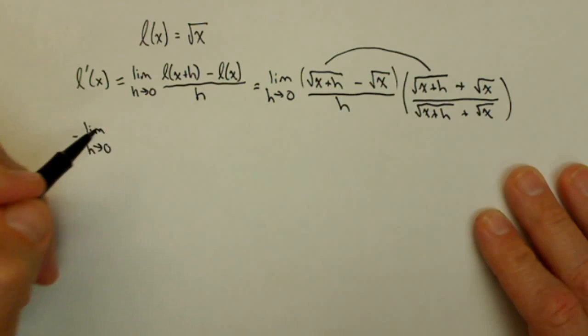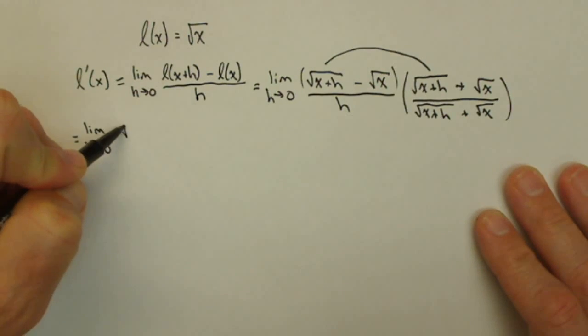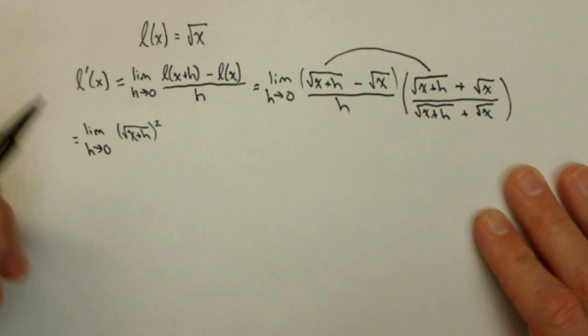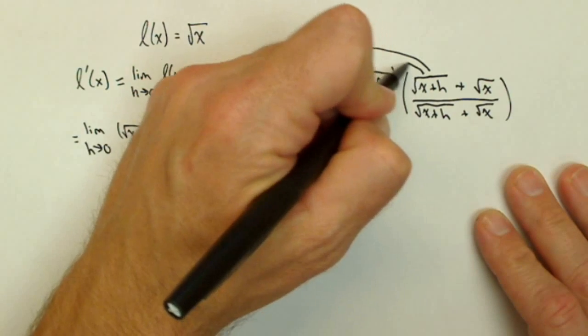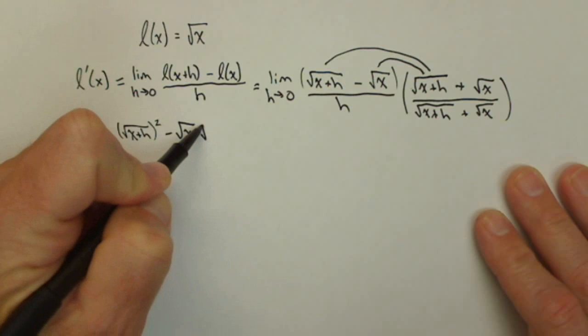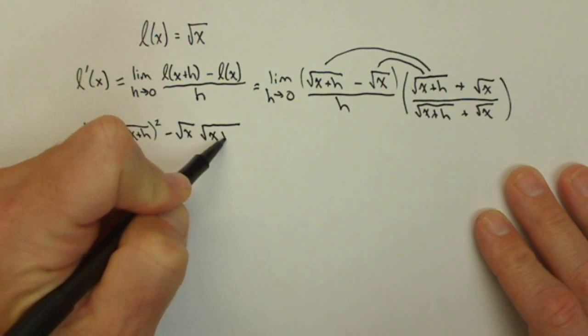Now when I multiply these two terms I'm going to get square root of x plus h squared. When I multiply these two terms I'm going to get minus square root of x times square root of x plus h.